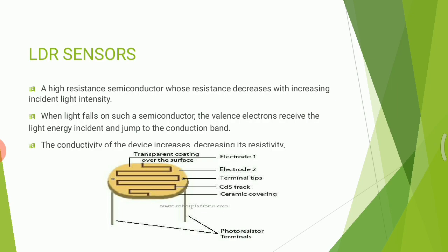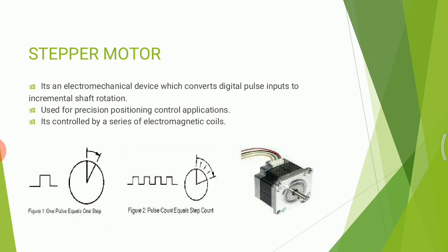LDR sensors are used to detect light intensity. A high-resistance semiconductor is used whose resistance decreases with increased incident light intensity. When light falls on the semiconductor, valence electrons receive light energy and jump to the conduction band. The signal is then sent to the PLC, as the conductivity of the device increases while resistivity decreases.